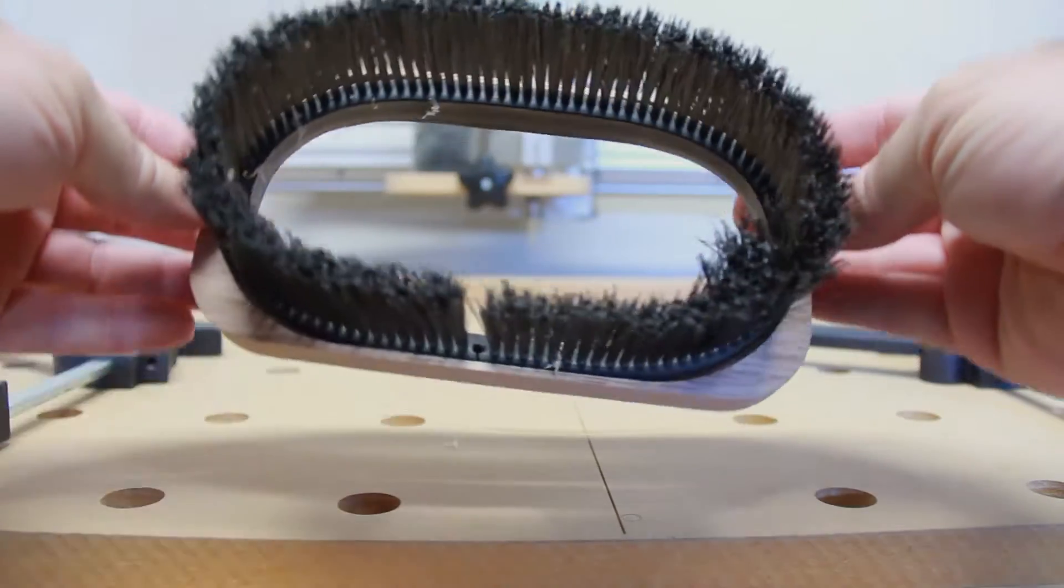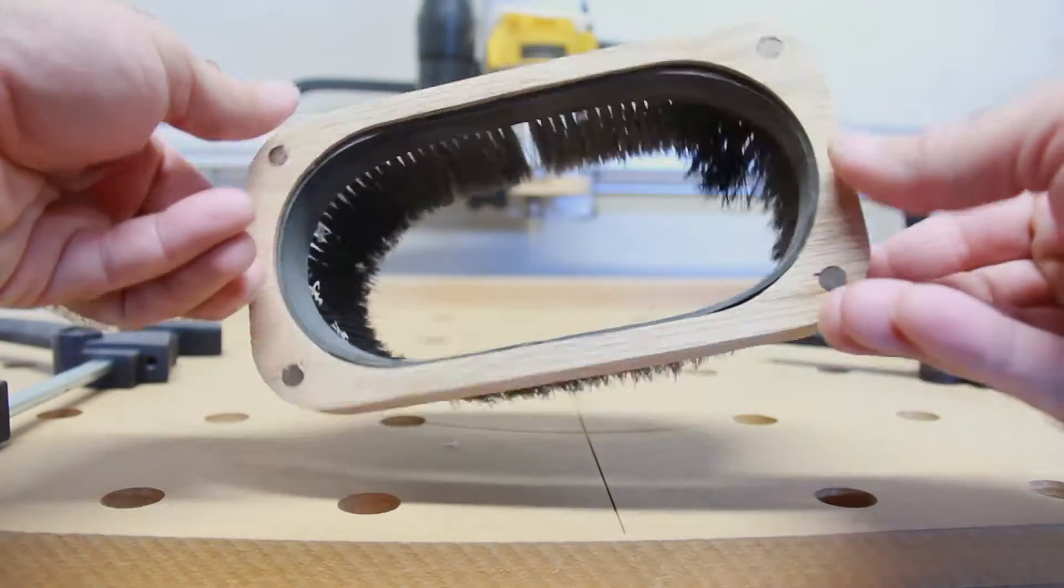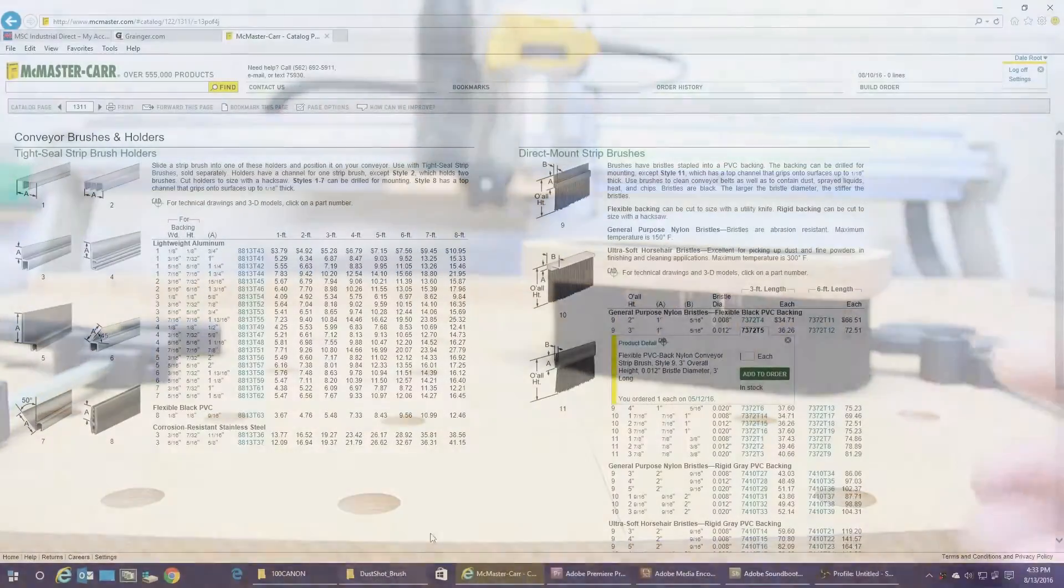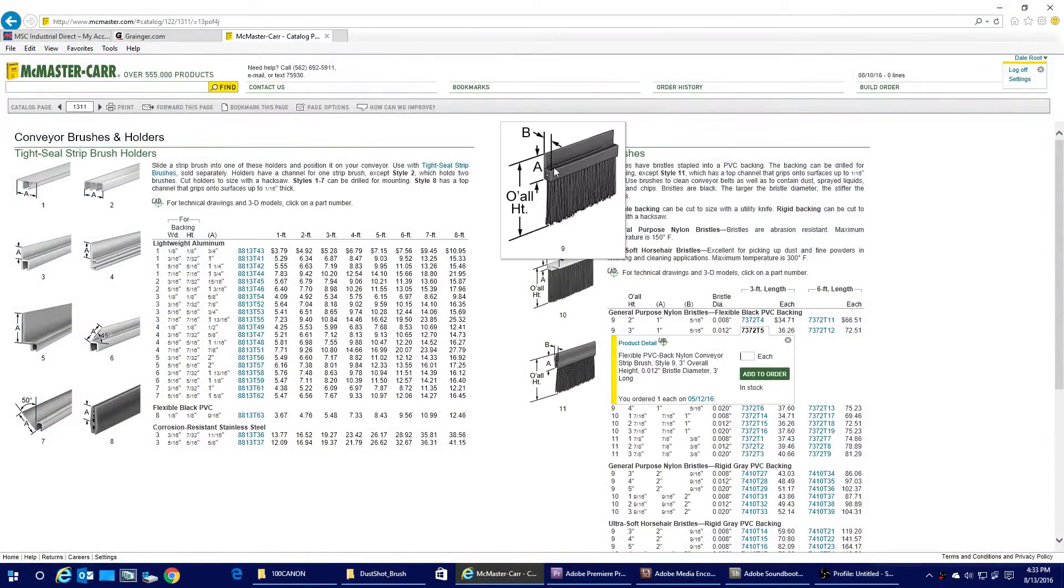After the dust skirt shootout video, we had some interest in the brush setup and where it came from. It's a conveyor brush, a direct mount type with a flexible PVC top, and we ordered it from Master Carr.